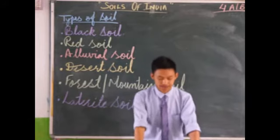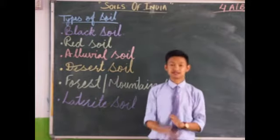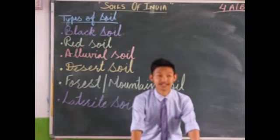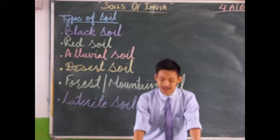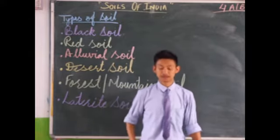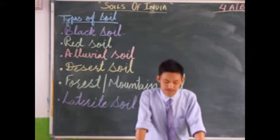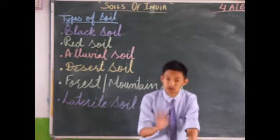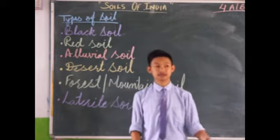Let's discuss black soil. It is also called regur soil or cotton soil. It is black in color, has a fine texture, and can retain a lot of water — it has high moisture retention. This type of soil is suitable for growing cotton. It is formed by the breaking of lava rocks that erupt from volcanoes. This soil is found in central and northwestern parts of India, the eastern part of Karnataka, Tamil Nadu, and Gujarat.